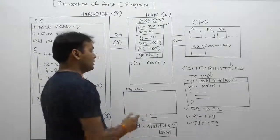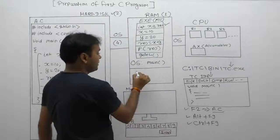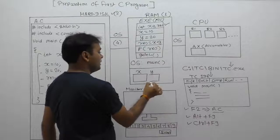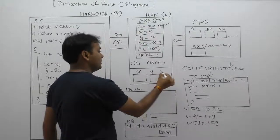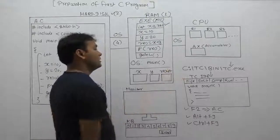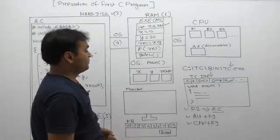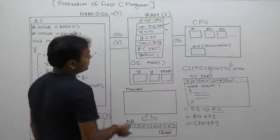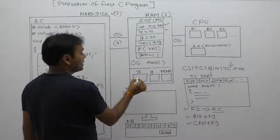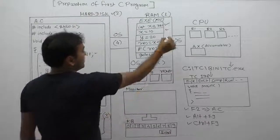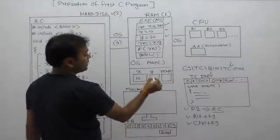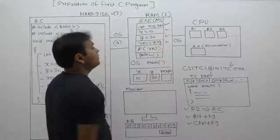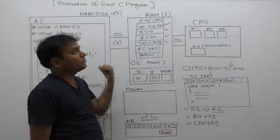All statements inside main are executed one by one. The instructions are available in the form of machine code format inside RAM memory. For the first statement, we are declaring three variables — therefore, inside RAM memory, three memory blocks are created for variable x, variable y, and variable result. According to the second statement, value 10 is assigned to location x. According to the third statement, value 20 is assigned to location y. Then the addition operation is performed, which is a responsibility of the processor.